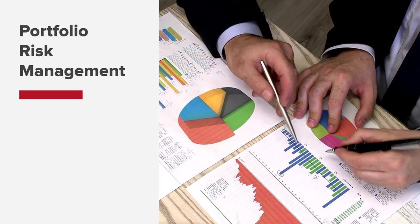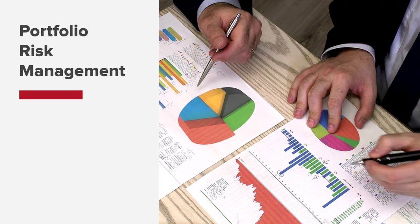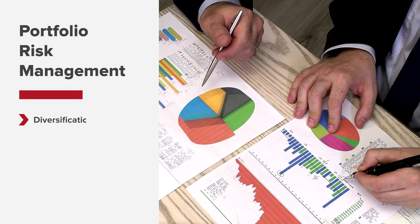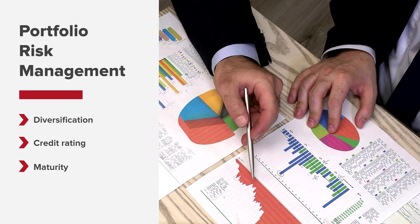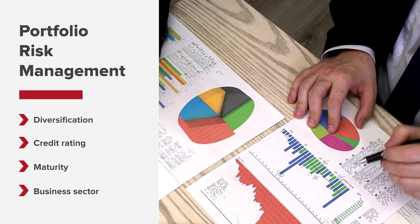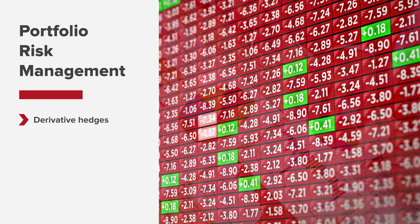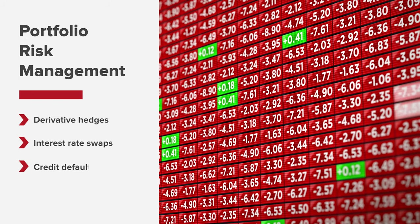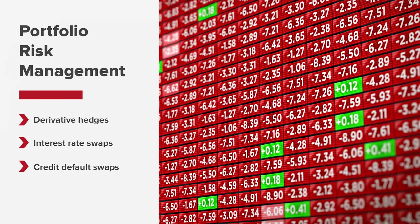Meanwhile, investors may also balance the risks in their corporate bond portfolios in several ways, including diversification by rating, maturity, as well as business sector, or hedge against risks with certain derivative instruments, such as interest rate or credit default swaps, to name some strategies.